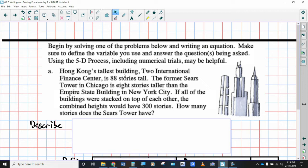And if you are able to do all of this without any trouble at all, you should be good to go for the chapter test and any kind of problem solving that we have to do for the rest of the year. So it says here that Hong Kong's tallest building, Two International Finance Center, is 88 stories tall. Former Sears Tower, I think it's now known as the Willis Tower, in Chicago is eight stories taller than the Empire State Building in New York City. If all the buildings were stacked on top of each other, the combined heights would have 300 stories. So I'm going to highlight this part because this is the question. How many stories does the Sears Tower have?